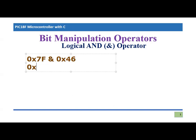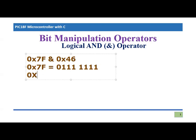Since this is a logical operation, it is always performed at the bit level. That is why these operators are also known as bit manipulation operators. We will convert them into binary numbers. 0x7F will become 0111 1111 in binary — that is, zero followed by seven ones — which is the binary equivalent of 7F.